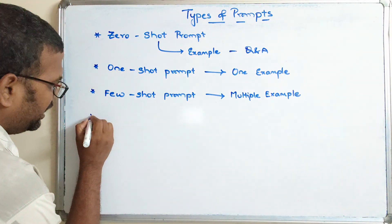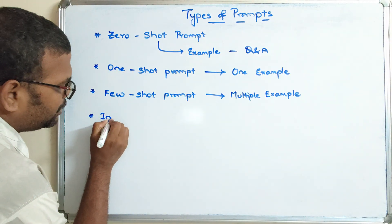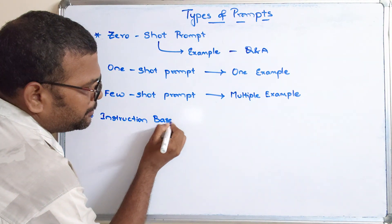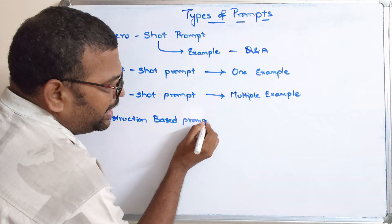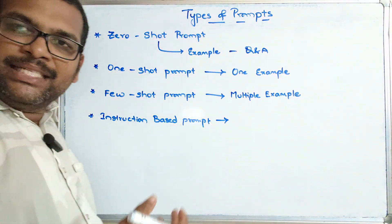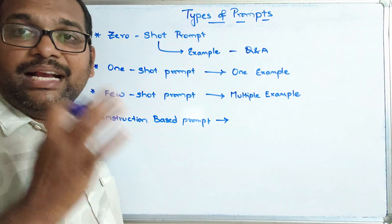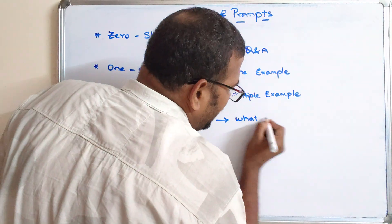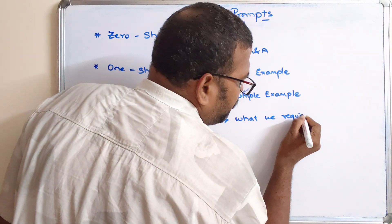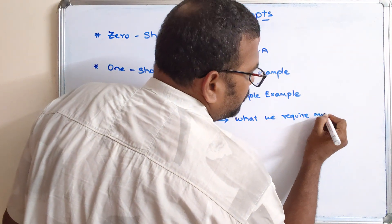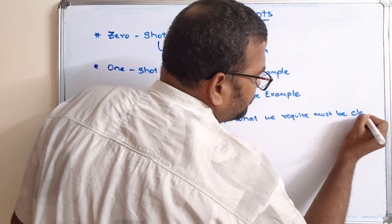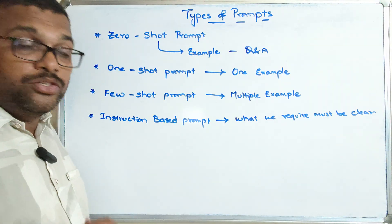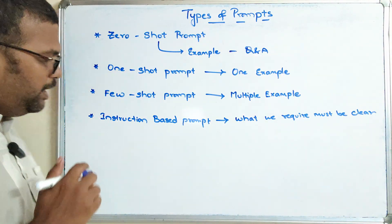The next category is the instruction-based prompt. The name itself indicates we need to give instructions. The instruction should be very clear about what we require. The instructions must be specific and clear, and here also there will be no examples.